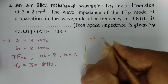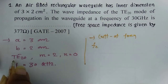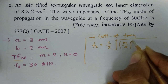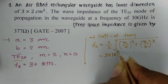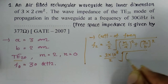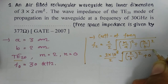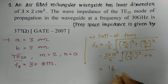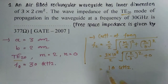The cutoff frequency basic formula for TE20 mode is: Fc = C/2 × √((M/A)² + (N/B)²). Here C = 3×10⁸, M = 2, A = 3 cm, and N = 0. Solving this gives a cutoff frequency of 10 GHz for TE20 mode.